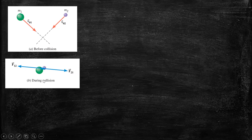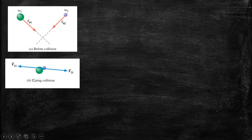During this collision we have two forces, F21 and F12. F21 is the force exerted on object number two from object number one, while F12 is the force exerted by object number two toward object number one. These two forces are action-reaction forces, as stated by Newton's third law of motion — equal in magnitude but in opposite directions.